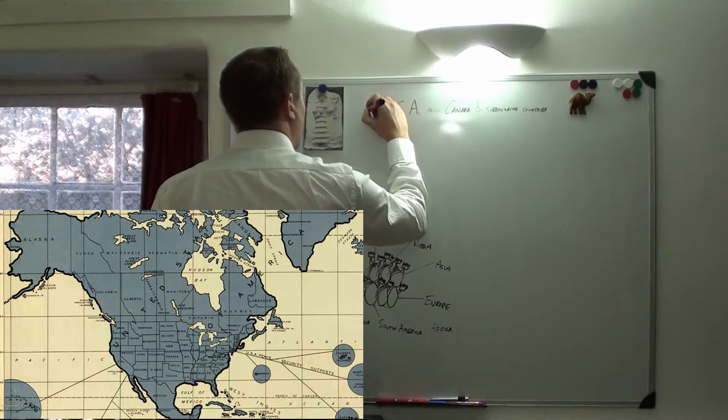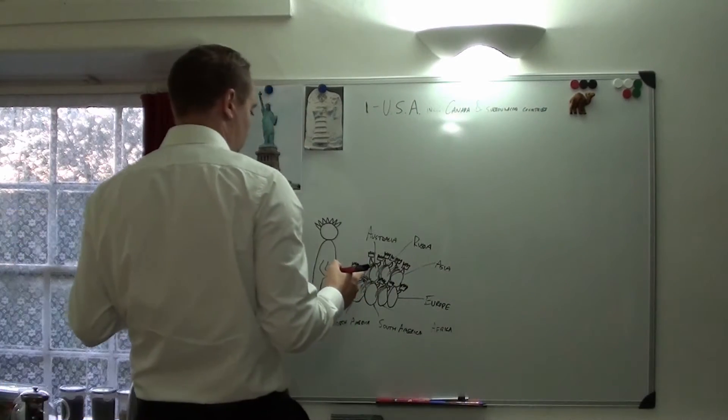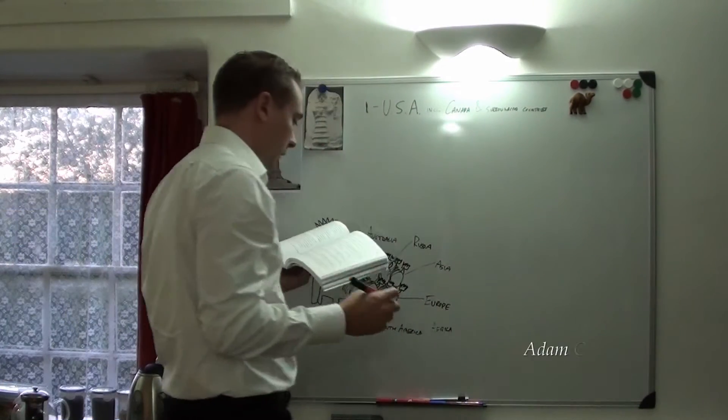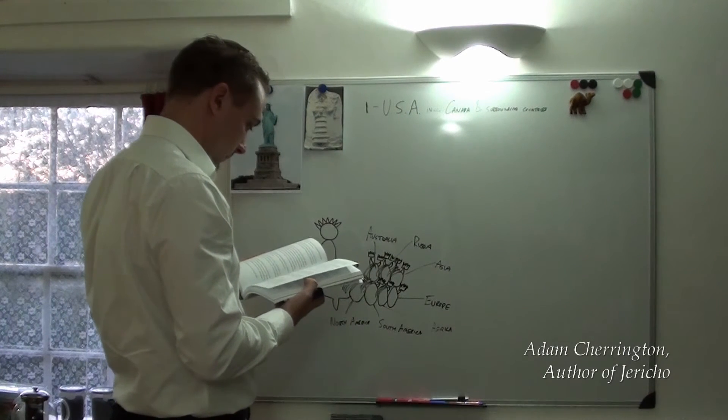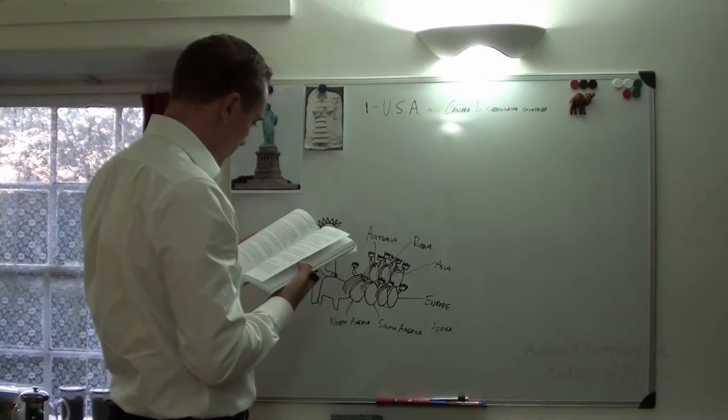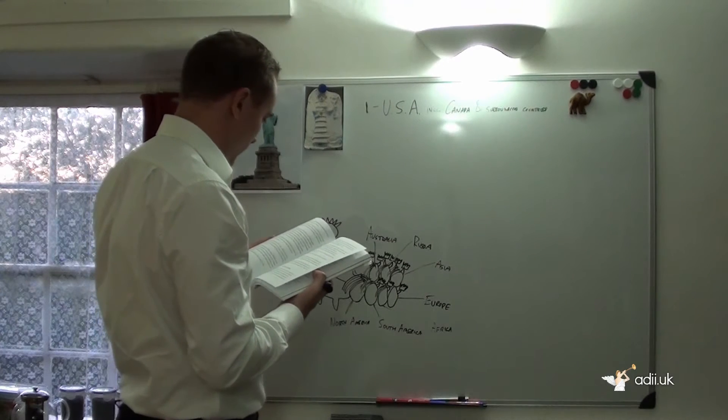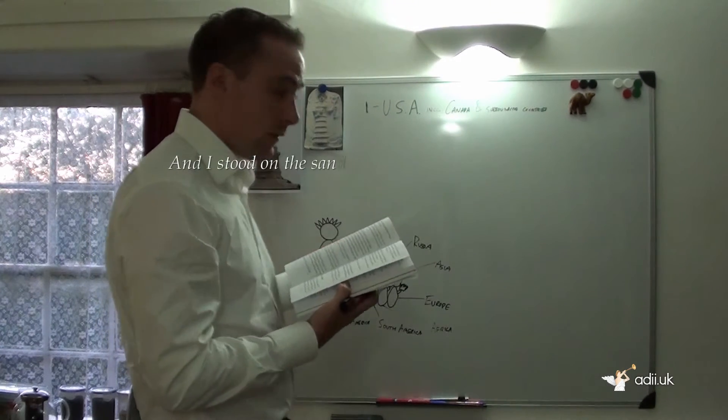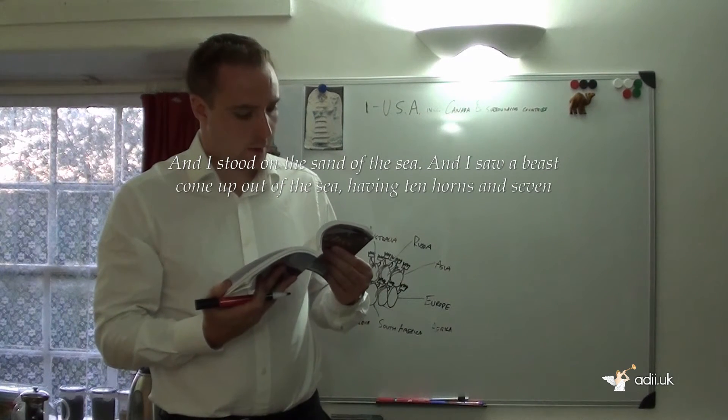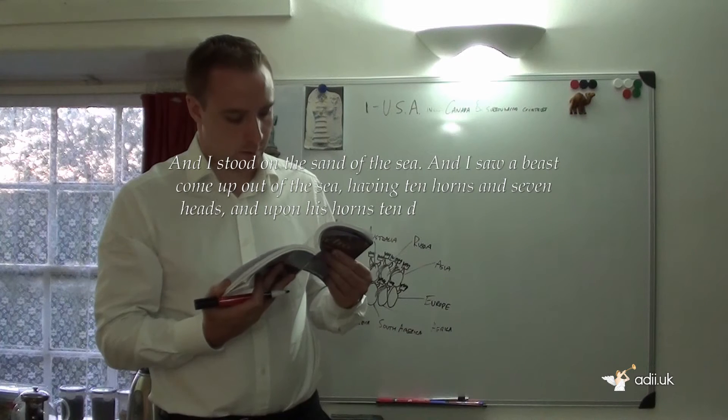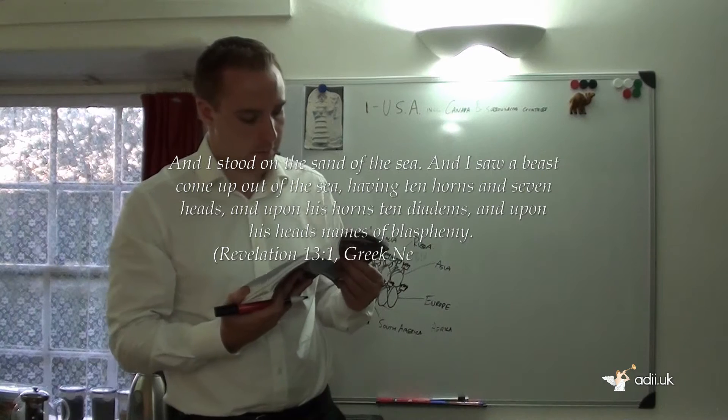John says there are seven heads, ten horns and ten diadems on the horns. This is in Revelation chapter 13, verse 1. And I stood on the sand of the sea, and I saw a beast come up out of the sea, having ten horns and seven heads, and upon his horns ten diadems, and upon his heads names of blasphemy.